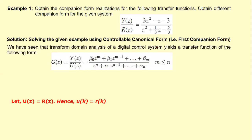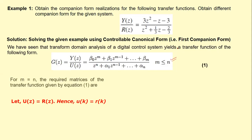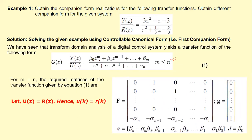The general transfer function for any linear time-invariant discrete time system is given. If we take m equal to n, the required matrices are the F matrix, G matrix, C matrix, and D matrix. F is the state matrix, G is the control matrix, C is the output matrix, and D is the state transmission matrix. Here we will take U(z) equal to R(z) because the transfer function is in terms of Y(z) upon R(z).